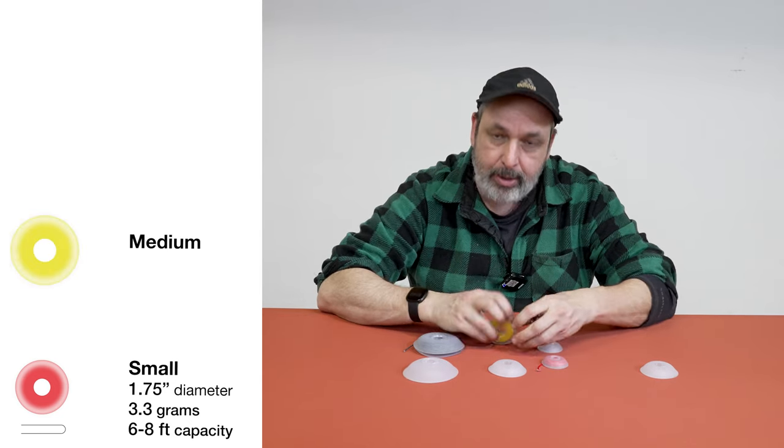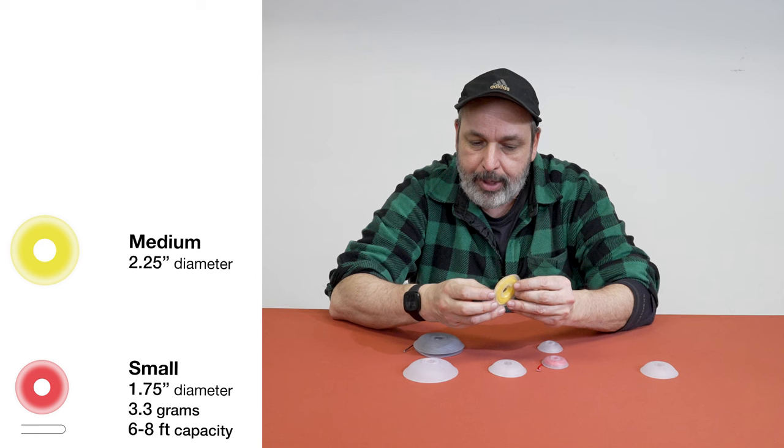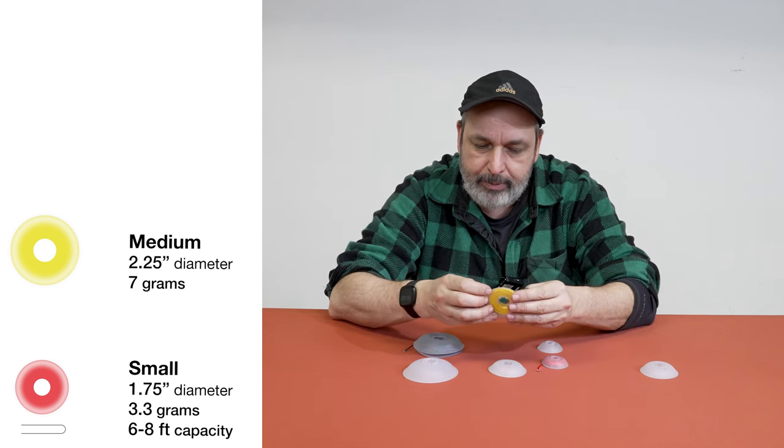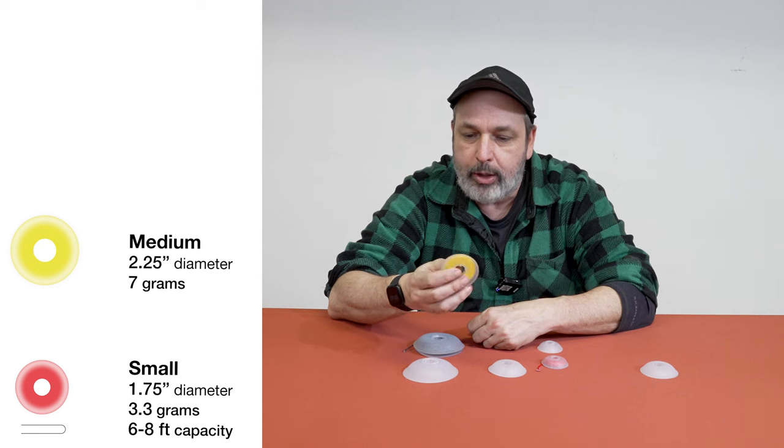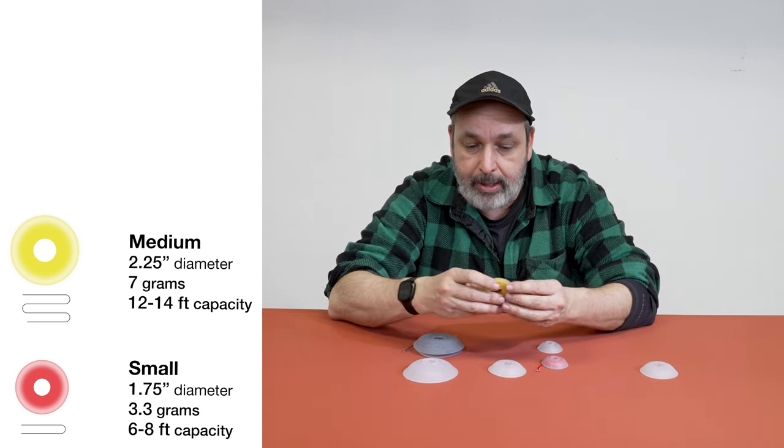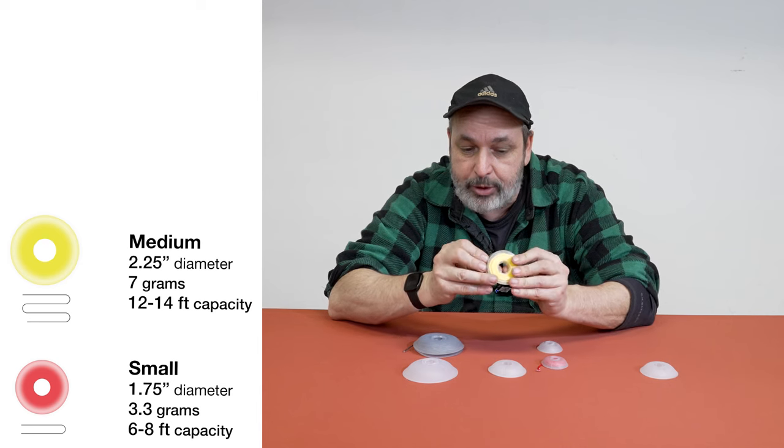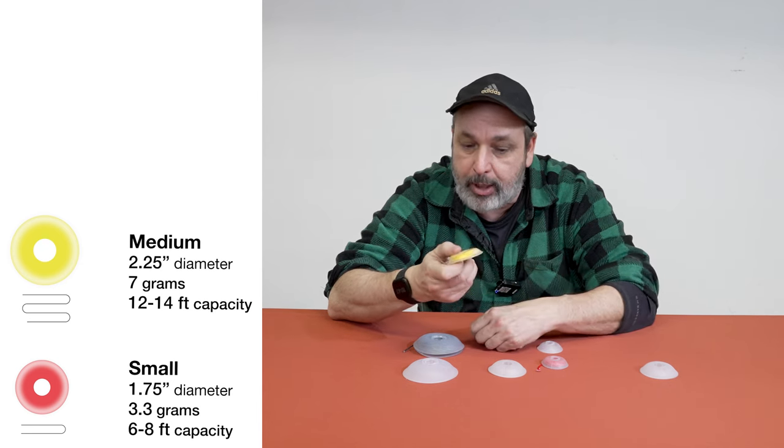So the medium, which is two and a quarter across, weighs seven grams and it will hold 12 feet really easily. This is 12 feet in here. I bet I could get a little bit more on there. Maybe we can get to 15. It just won't close up quite right, but it would still be okay.